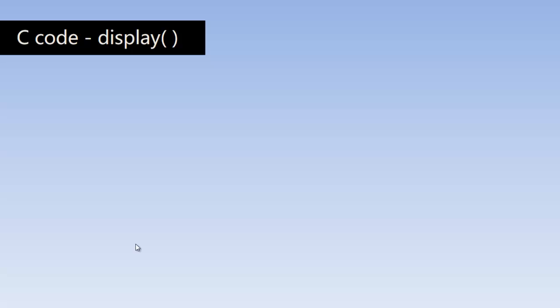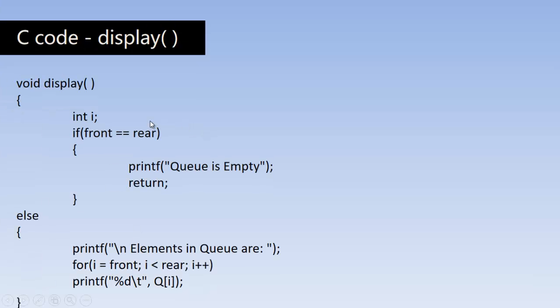We will also see the code for the display operation. Similarly, if front equals rear, the queue is empty and no elements have been inserted. Otherwise, elements in the queue are displayed using a for loop: starting from i equal to front, while i is less than rear, we print all elements in the array representing the queue. This code uses many C concepts — functions, if-else, and loops. If you are not familiar with these, I recommend watching our C programming playlist where all basic concepts are explained.